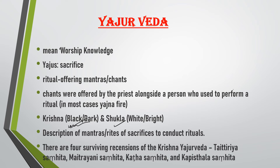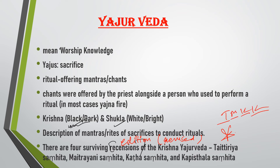There are 4 versions, or recensions, of Krishna Yajurved. Recension means a specially revised edition. So there are 4 recensions of Krishna Yajurved — this is a very important point and a question can be made from it. The four recensions are: first is Taittiriya Samhita, second is Maitrayani Samhita, third is Katha Samhita, and fourth is Kapisthala. So: Taittiriya, Maitrayani, Katha, Kapisthala.